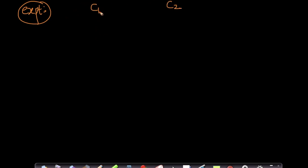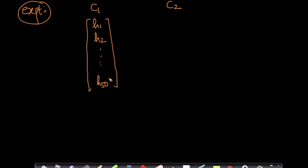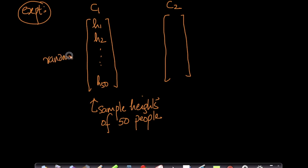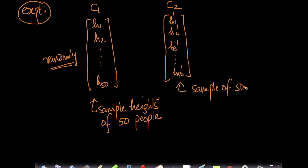We have City 1 and City 2. I will randomly pick 50 people from City 1 and take their heights — this is a sample. These are sample heights of 50 people living in that city: h1, h2, ... h50. Similarly for City 2, I'll take the heights of 50 random people: h1', h2', h3', ... h50'. This is also a sample of size 50.